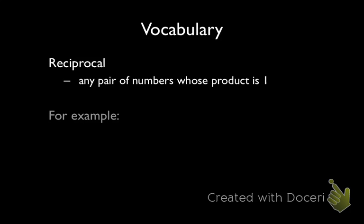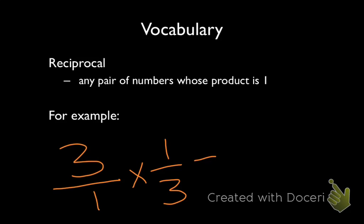So, for example, if I had the number 3, its reciprocal is going to be 1/3. That's because if I were to represent 3 as a fraction, that would be 3 over 1. And if I were to multiply by the reciprocal 1/3, 3 times 1 is 3, and 1 times 3 is 3. And 3 over 3 simplifies to 1. So again, the reciprocal is any pair of numbers whose product is 1.